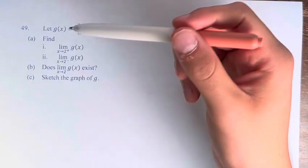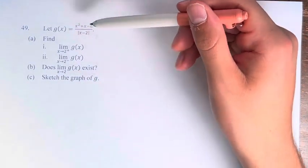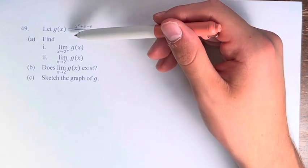Hello and welcome back to another video. So in this problem, we're told to let g of x equal x squared plus x minus 6 over the absolute value of x minus 2.